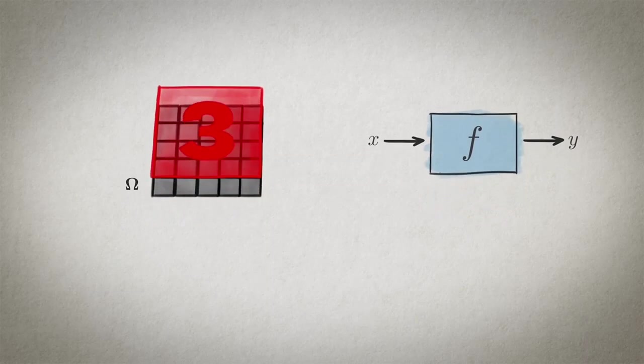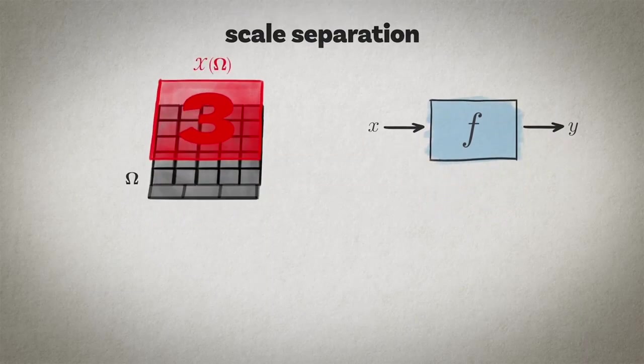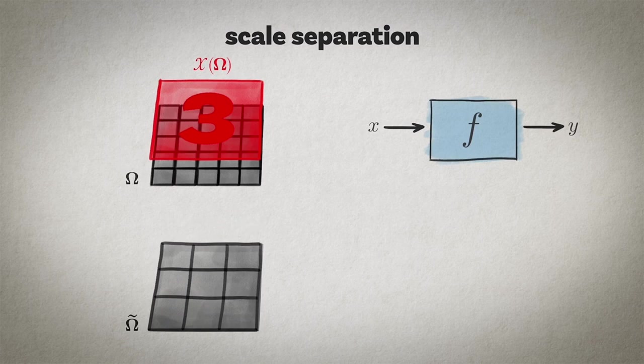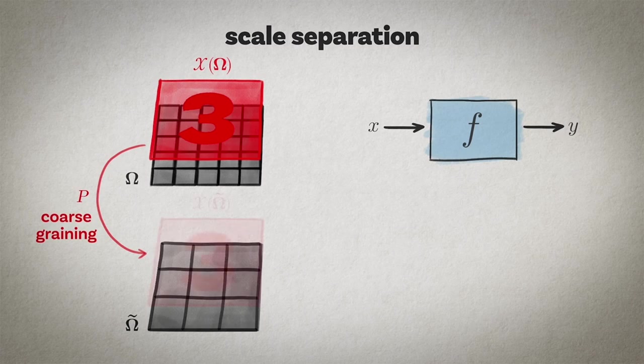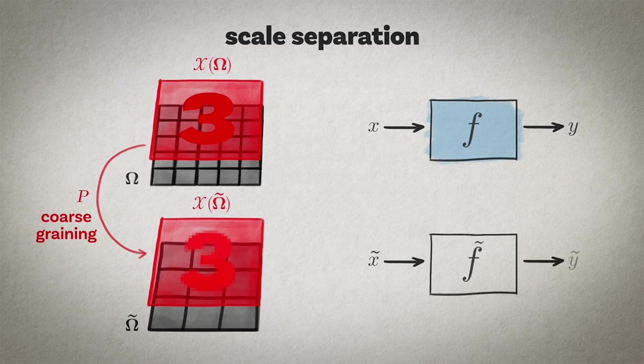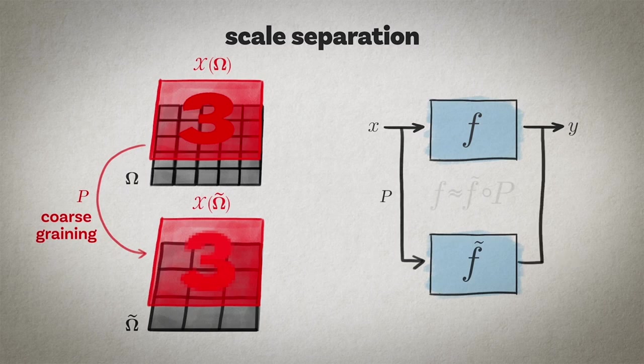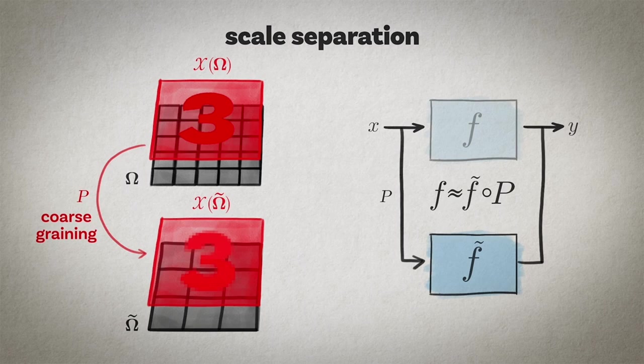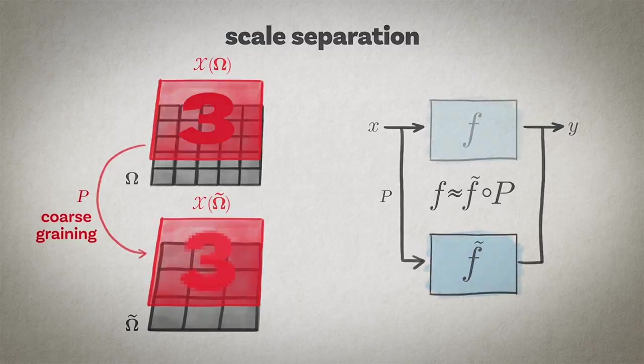Another type of geometric prior is called scale separation. In some cases, we can construct a multi-scale hierarchy of domains by assimilating nearby points and producing also a hierarchy of signal spaces that are related by coarse graining operator p. On these coarse scales, we can apply coarse scaled functions. We say that our function f is locally stable if it can be approximated as the composition of the coarse graining operator p and the coarse scale function f prime. While the original function f might depend on long-range interactions on the domain, in locally stable functions, it is possible to separate the interactions across scales by first focusing on localized interactions and then propagating them towards the coarse scales.